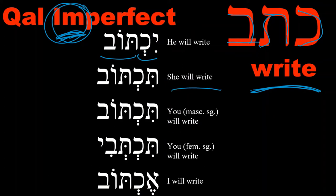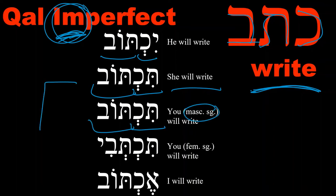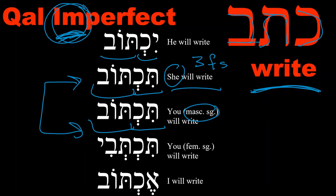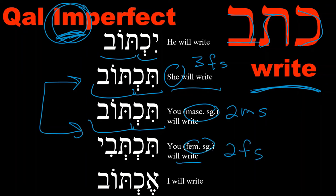If we wanted to say 'she will write,' we would say tiktov. If we wanted to say 'you will write,' masculine singular (2MS), we would also say tiktov. Take note that this is the same word. From the context, you will be able to determine if this is third person feminine singular (3FS) or second person masculine singular (2MS). Now, if we wanted to say 'you,' feminine singular (2FS), will write, we would say tikteví.